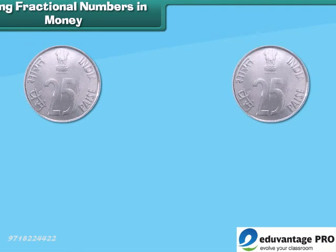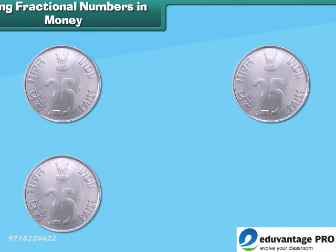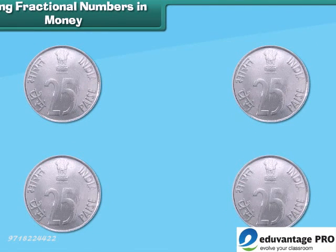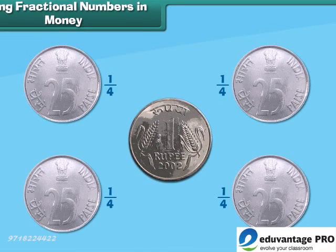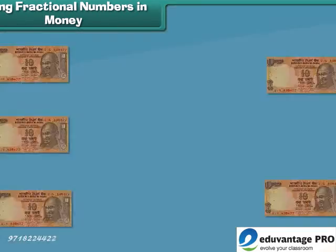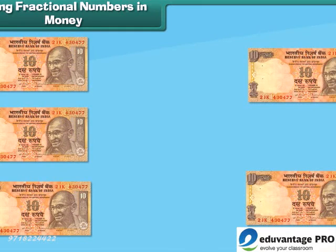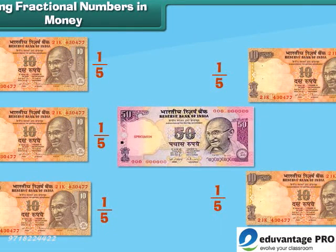Look at these 25 paisa coins. One 25 paisa coin is one fourth of the one rupee coin. Similarly, one 10 rupee note is one fifth of one 50 rupee note. So kids, fractional numbers are used in money too.